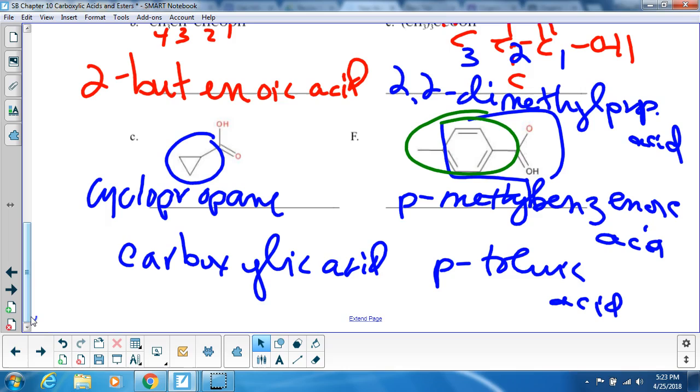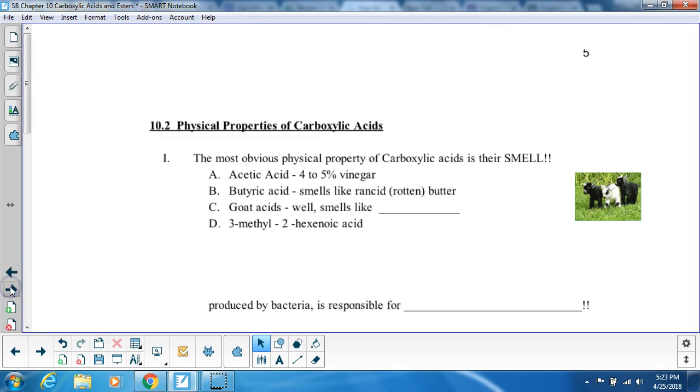Go ahead and turn the pages, quickly talk about properties, and then I'll be done. So, physical properties of carboxylic acids, the most obvious physical properties are their smell. So if you think of vinegar, you know how pretty pungent vinegar is,